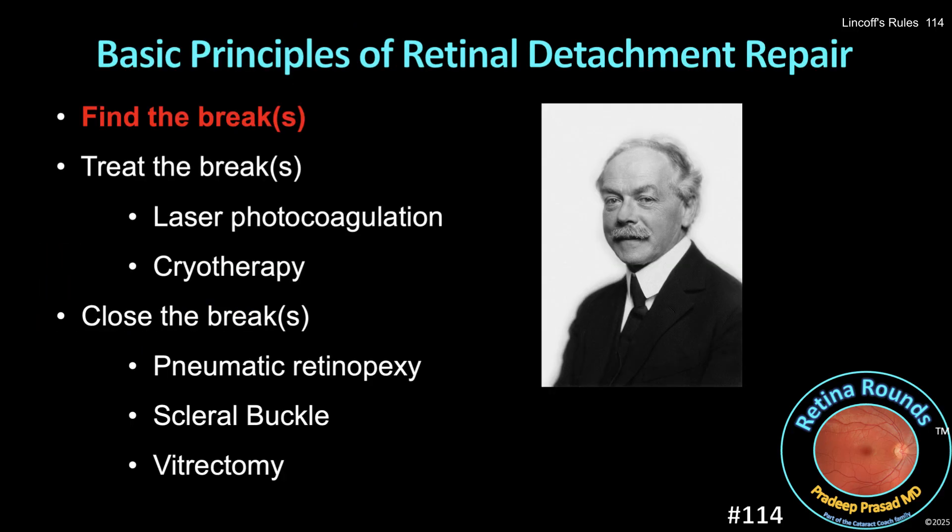More than a century ago, Dr. Jules Gonan gave us our playbook for how to fix retinal detachments. There are three basic principles. First, find the break. Next, close the break by creating some form of chorio-retinal adhesion — we currently use either laser photocoagulation or cryotherapy. And last, close the break, meaning re-oppose the retina to the underlying RPE. Our options include pneumatic retinopexy, scleral buckling, and/or vitrectomy.